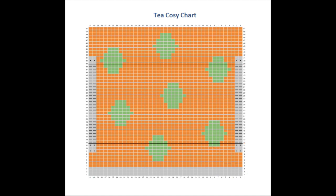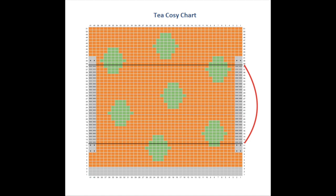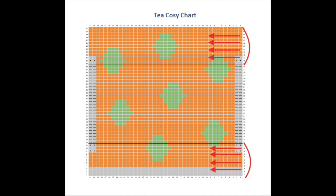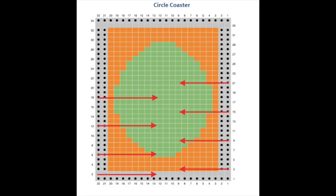When you're working flat, you will be reading the odd-numbered rows from right to left — those are usually your right side rows — and you will be reading your even-numbered rows from left to right. That's usually the reverse side of the work. So in the round, always right to left. When you're working flat, you read in both directions depending on which number row you're looking at.